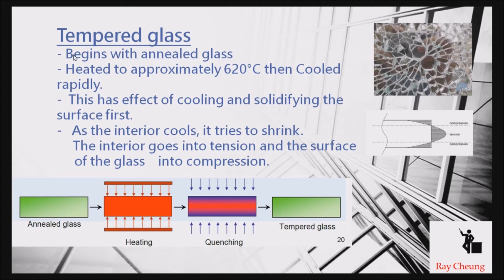You will also see that sometimes we use tempered glass. When tempered glass is broken, it will break into very small pieces. It will not easily injure the people nearby. The process starts from annealed glass, then heating, then cooling — forming tempered glass, with the interior of the glass in tension and the outside in compression.